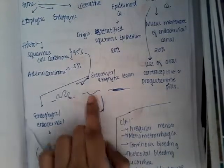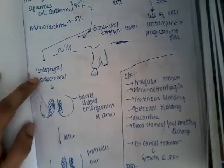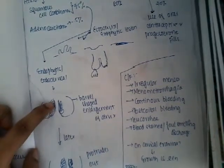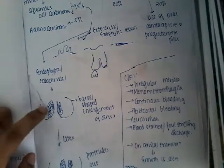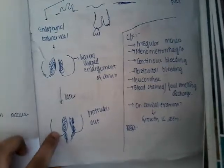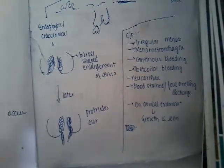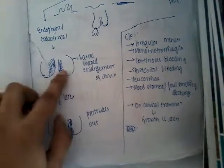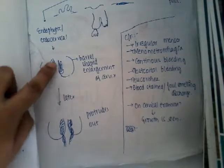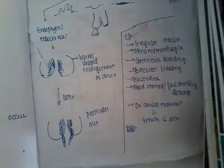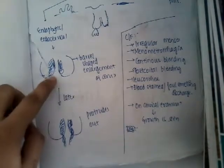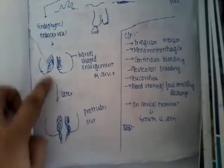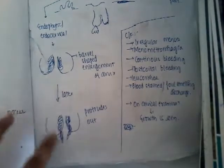The endocervical lesion starts in the endocervical canal, infiltrates the surrounding structures initially, and later may protrude out of the cervix as a polyp or growth. First, there is a barrel-shaped enlargement of the cervix because the infiltration occurs inside the endocervical canal, leading to an increase in size of the cervix. This growth may then protrude outward due to increased growth later.